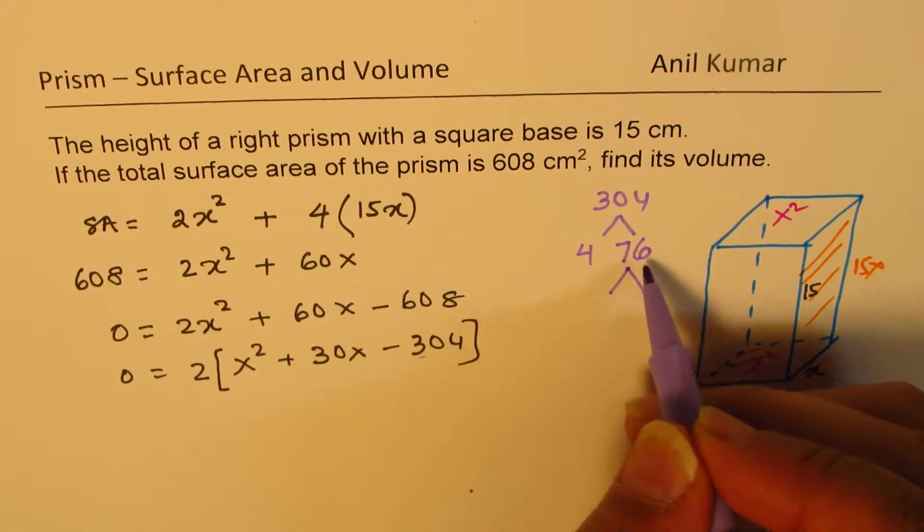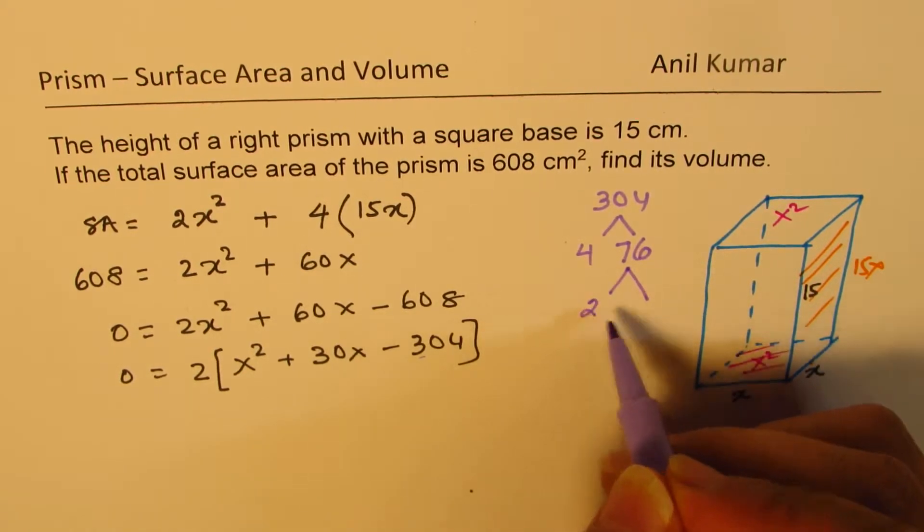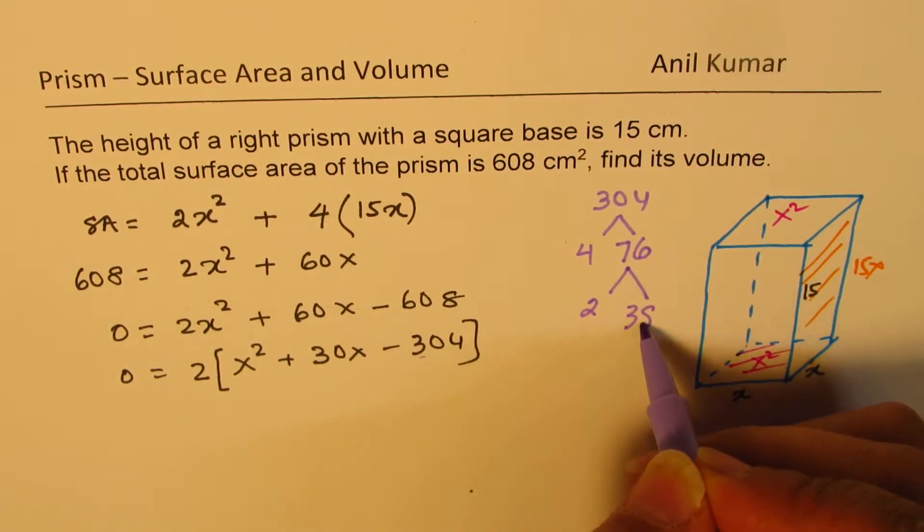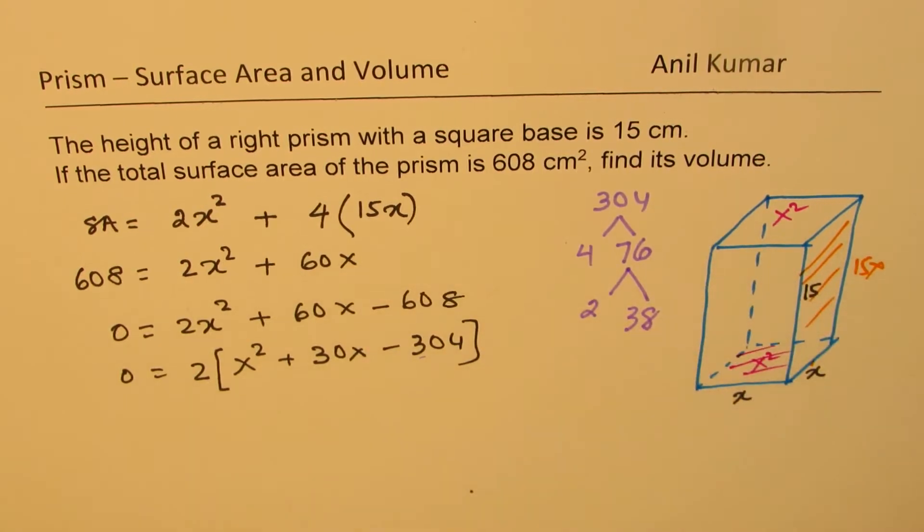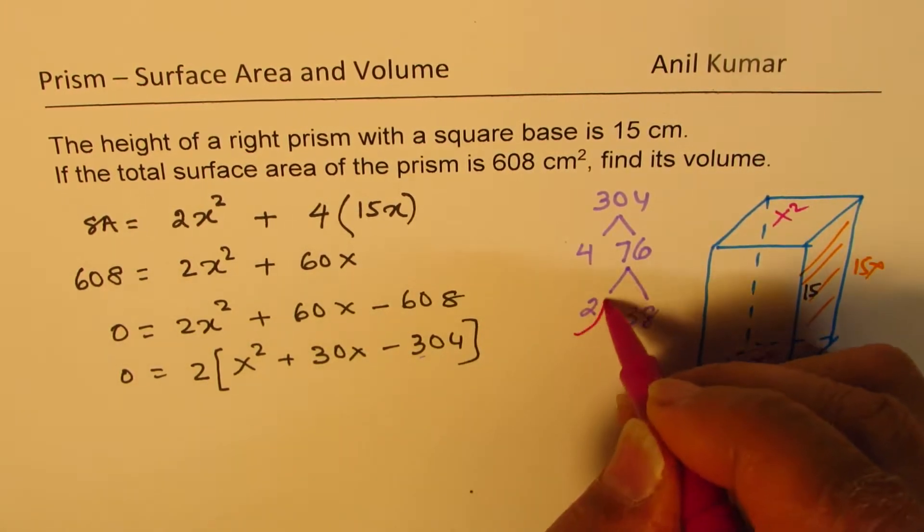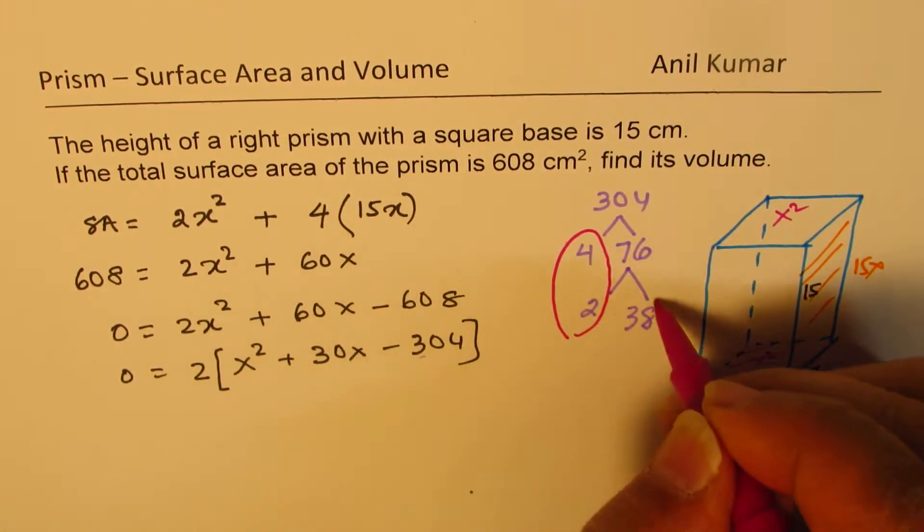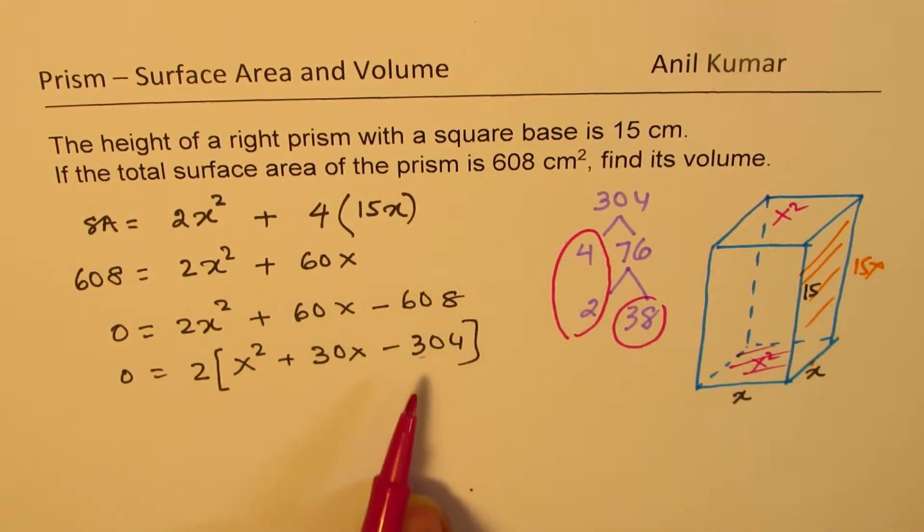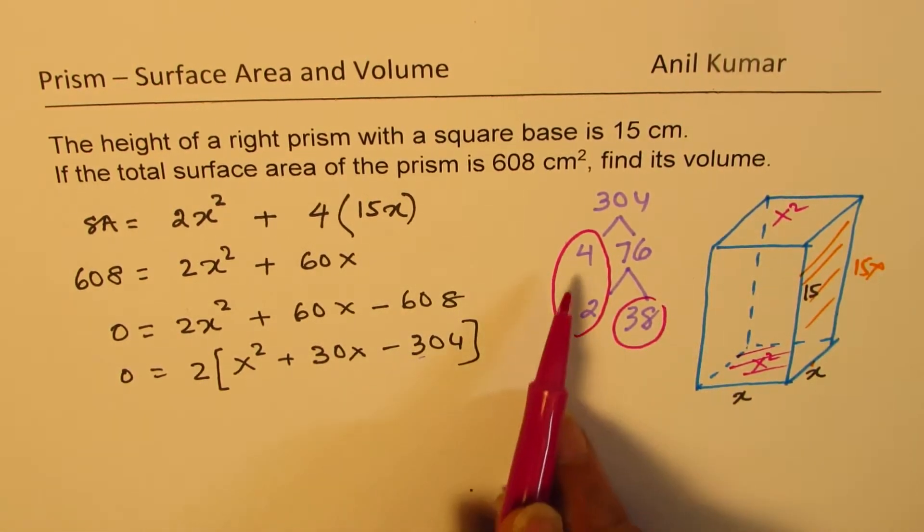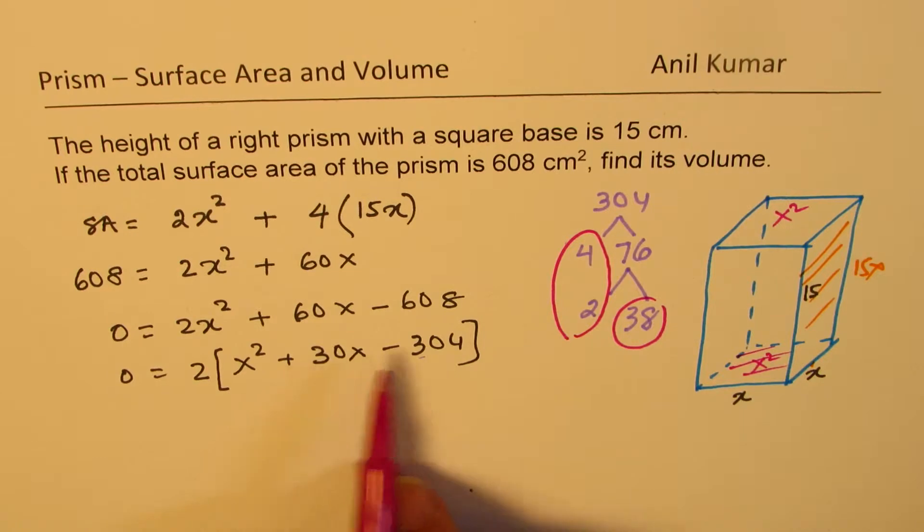Now, again, 76, we could factor as 2 times 38. So if I take this combination, 4 times 2 is 8, and 38, we do get a product of 304 and sum of 30. 8 and you take away from 38.